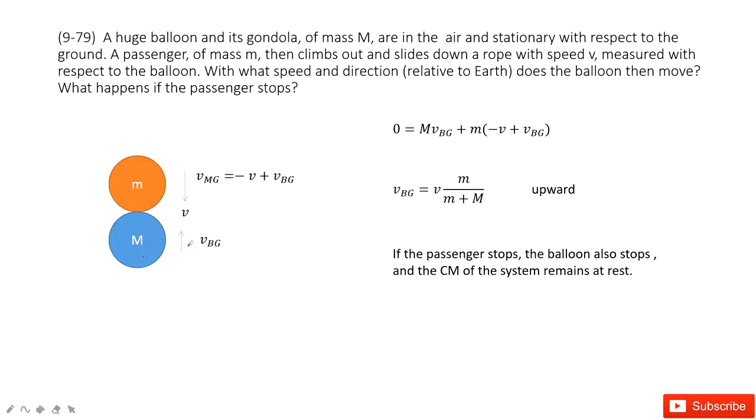It moves up with velocity v_bg. And then we find an orange object. The mass is m, and it moves with velocity v relative to M, the capital M, the blue one, but it moves down.